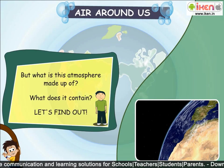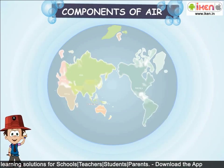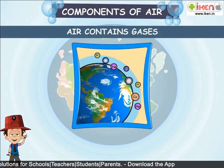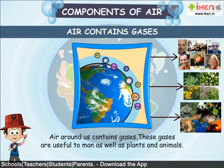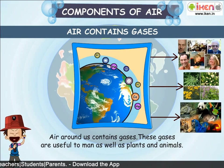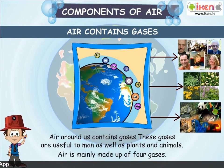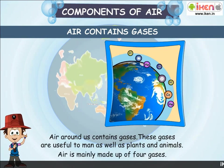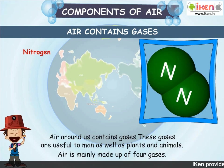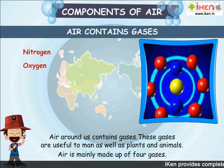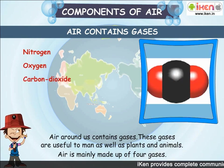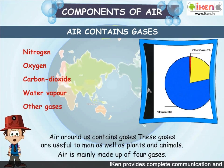Let's find out. Air contains gases. The air around us contains gases. These gases are useful to man as well as plants and animals. Air is mainly made up of four gases: nitrogen, oxygen, carbon dioxide, water vapor, and other gases.